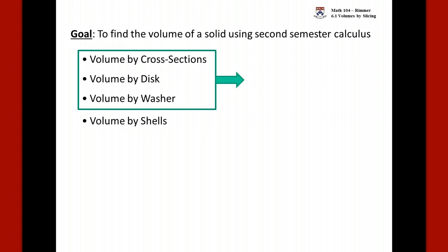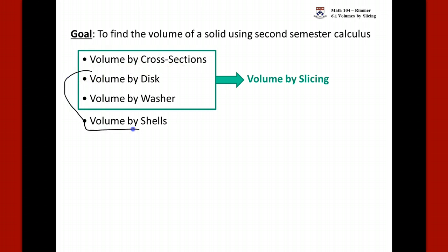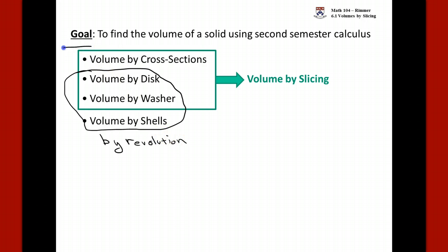The first three — cross sections, disc, and washer — can be grouped together under the title of volume by slicing. The disc and washer methods are also volume by revolution, where we take a region in the XY plane and revolve it around some axis. The cross section method does not involve revolving.